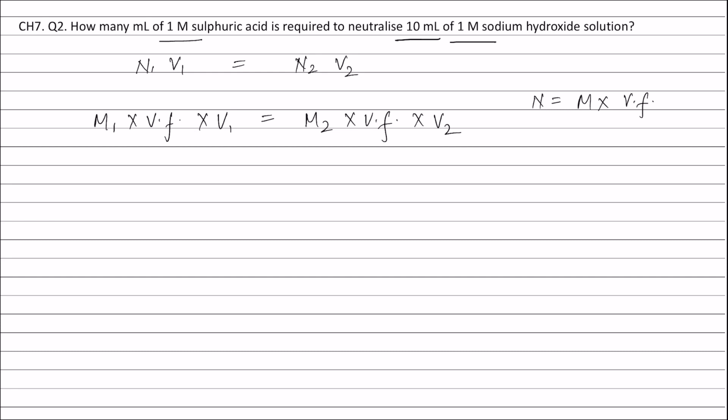Putting the values: M1 is 1, valency factor of sulfuric acid is 2 because basicity of sulfuric acid is 2, into V1, and this is equal to